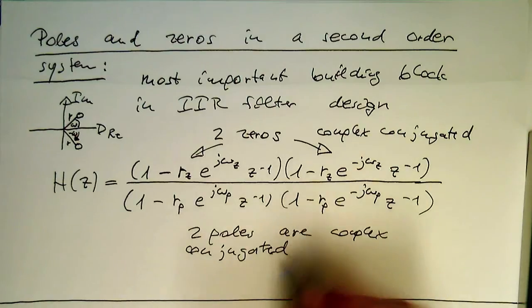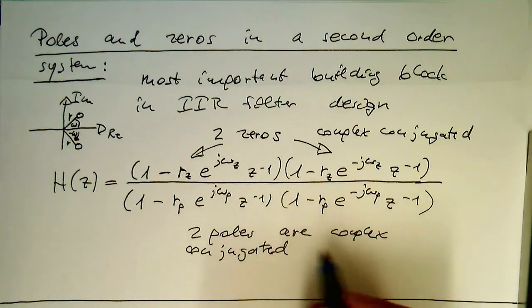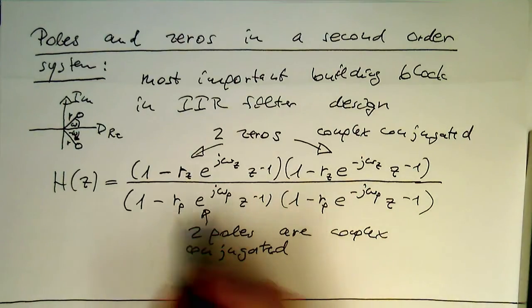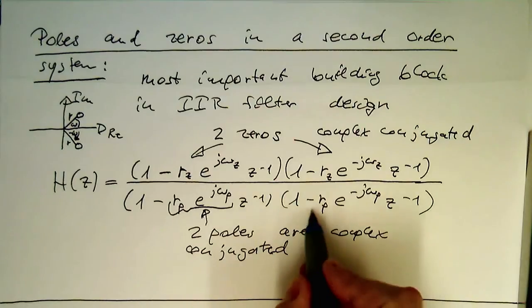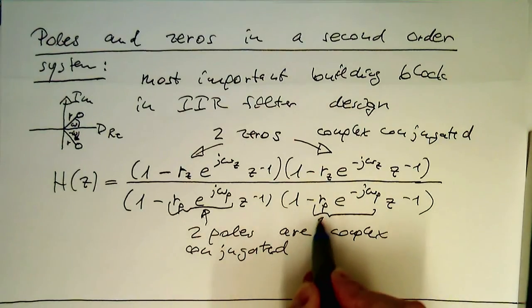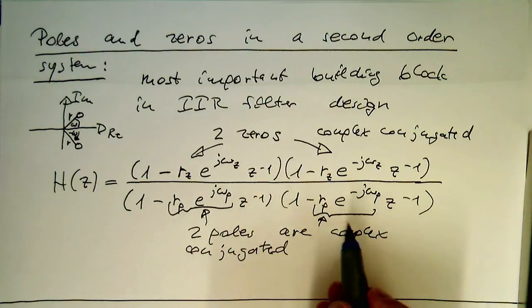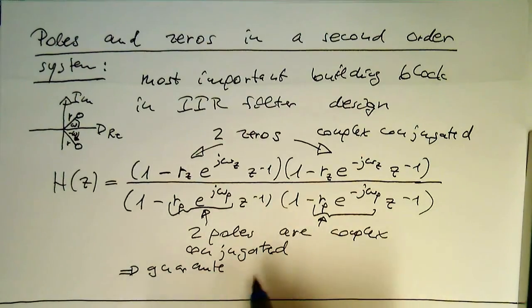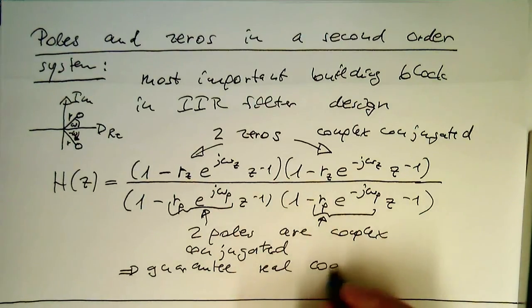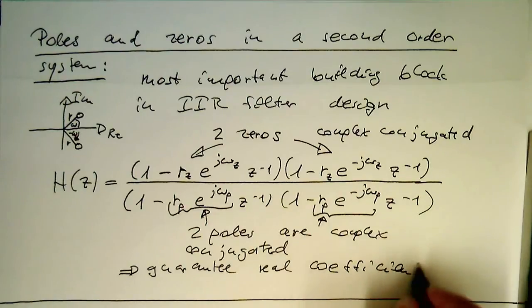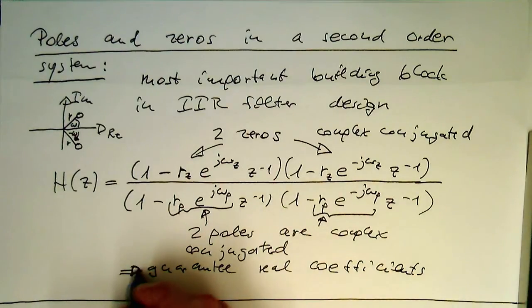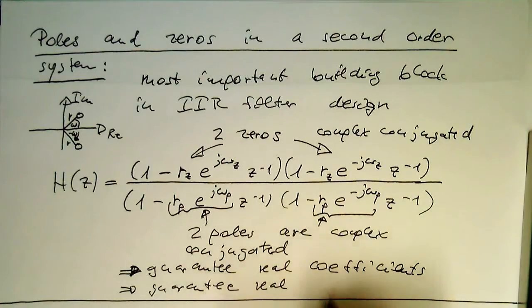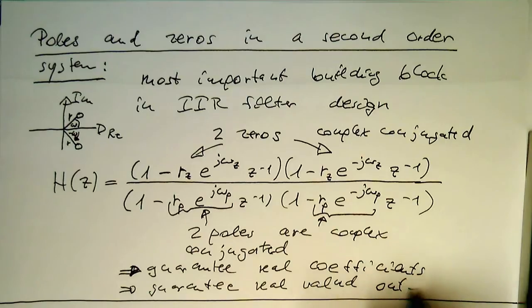And what we've learned from the previous example, that complex conjugated poles and zeros generate real results and also real coefficients. So here we've got the one coefficient and here's the other coefficient. So again, they're complex conjugated, and so they guarantee real coefficients and they guarantee real valued output.